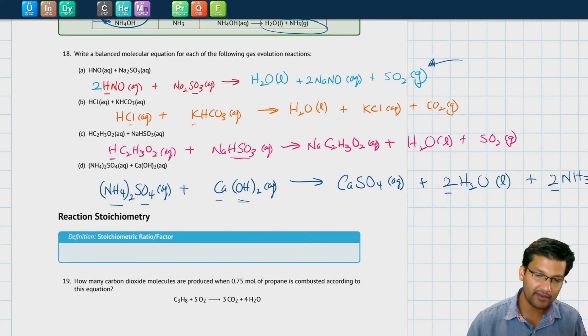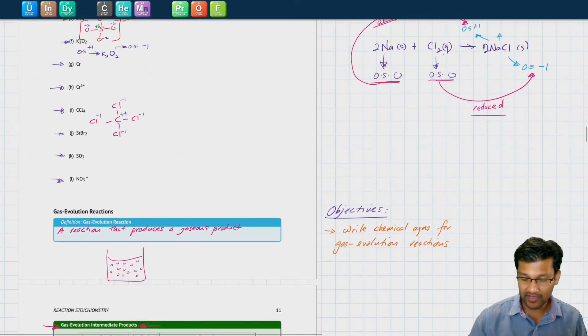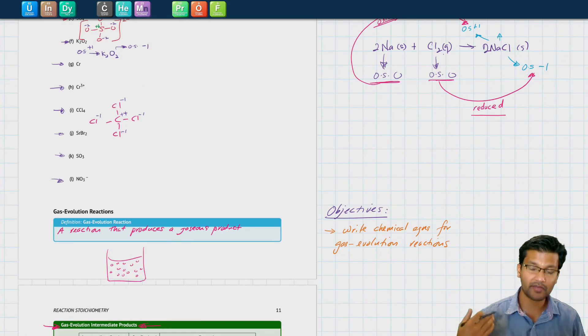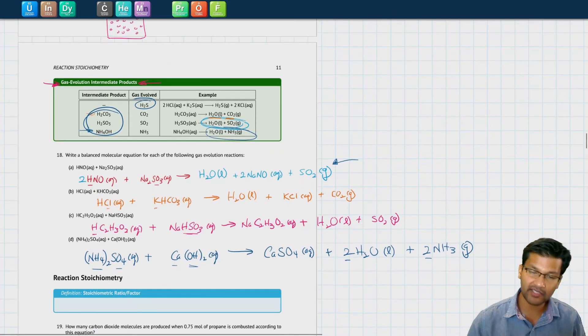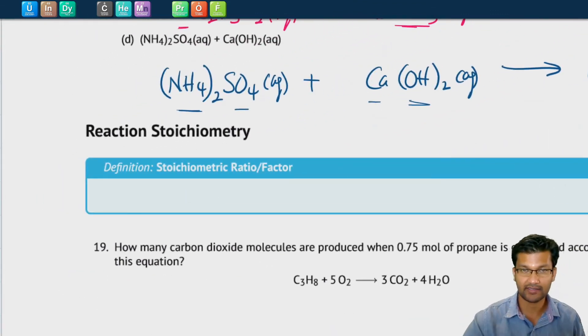That brings us to the end of our different types of reactions that we went over. We went over precipitation reactions that form solid precipitates, acid-base reactions that form salt and water, oxidation-reduction reactions where electrons move from one species to another, and we look now at gas evolution reactions where one of the products that we form is a gas. I will see you in our next video when we talk about reaction stoichiometry. I'll see you then. Bye.